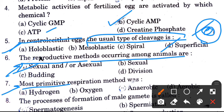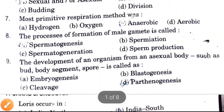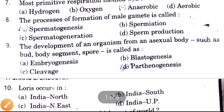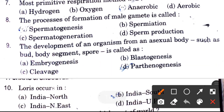The most primitive respiration method — options are hydrogen, oxygen, anaerobic, aerobic. The answer is anaerobic.